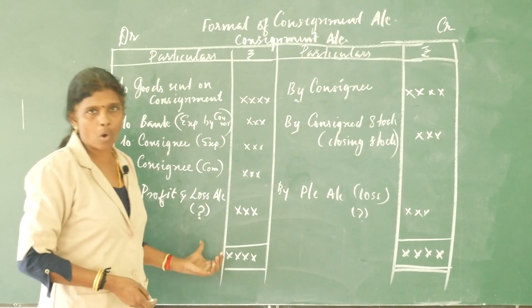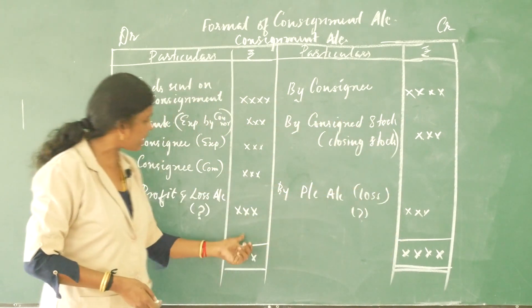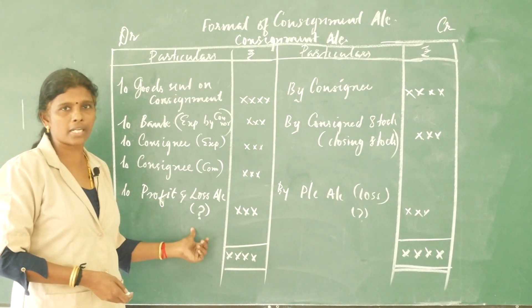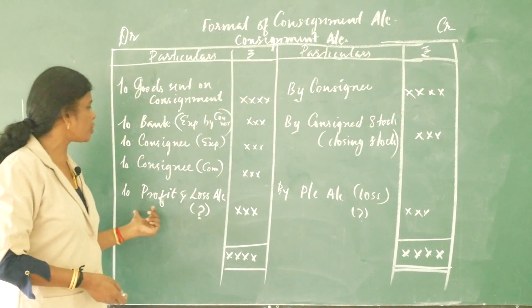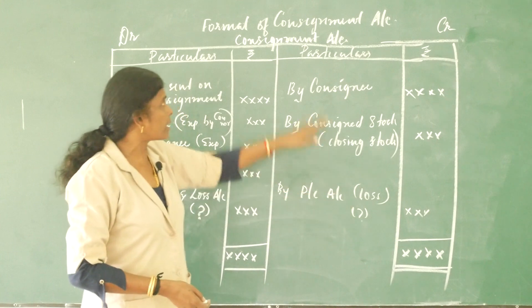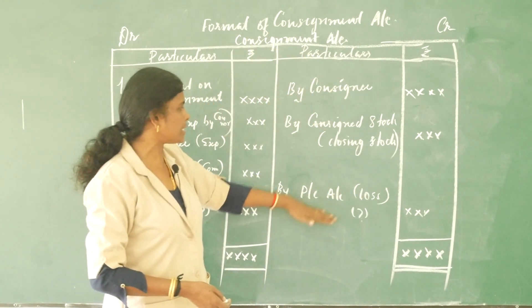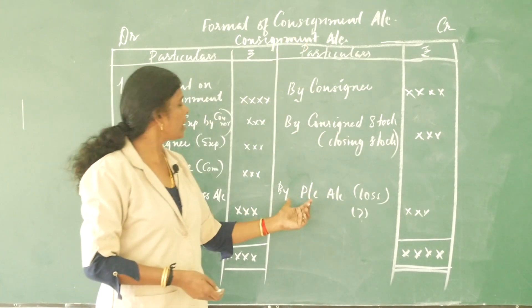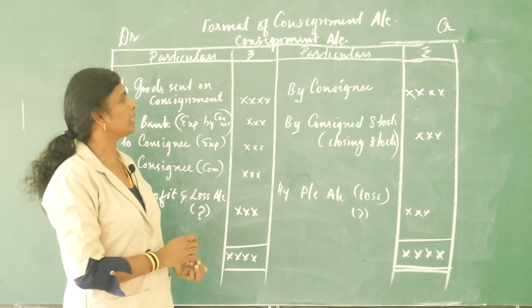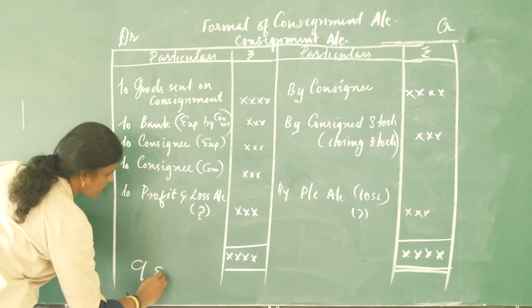If there is a profit — that means the credit side is more than the debit side — the journal entry is: Consignment Account debit to Profit and Loss Account. If it is a loss, the entry is: Profit and Loss Account debit to Consignment Account. There are seven general entries in all for consignment account.